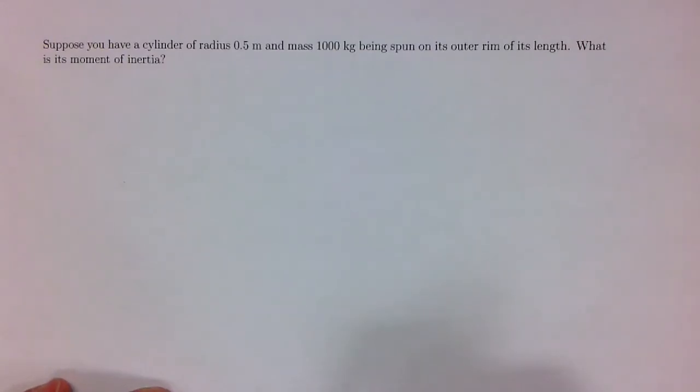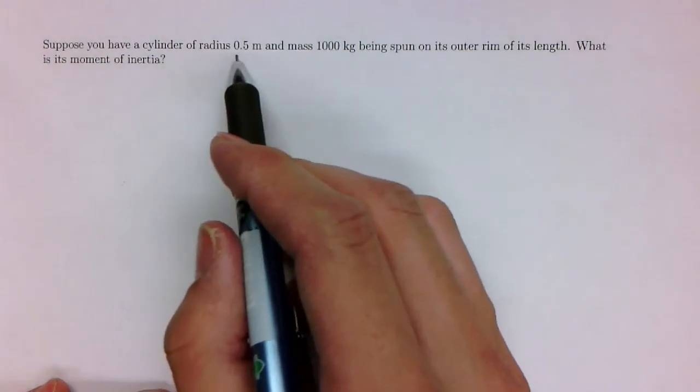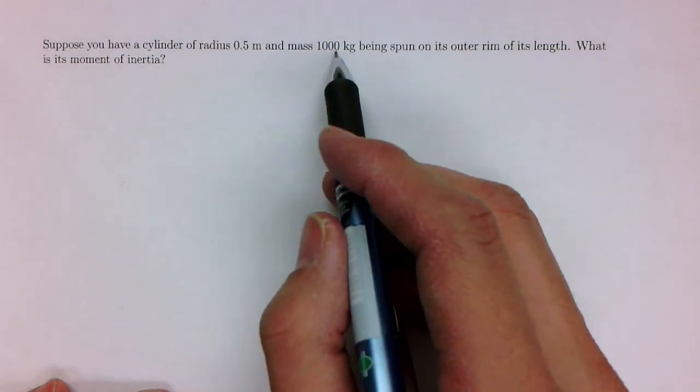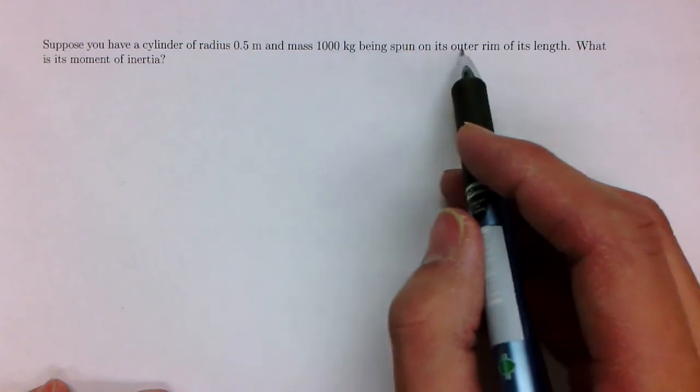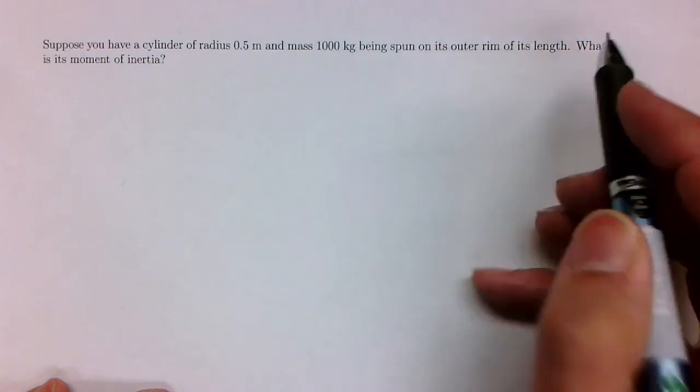This next example is the first encounter with moment of inertia calculations that we will have. Suppose you have a cylinder of radius 0.5 meters and a mass of 1,000 kilograms being spun on its outer rim of its length. What is the moment of inertia?